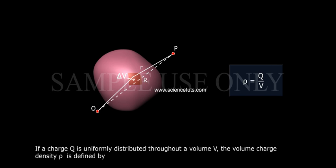If a charge Q is uniformly distributed throughout a volume V, the volume charge density rho is defined by rho equals Q by V, where rho has units of coulomb per meter cube.